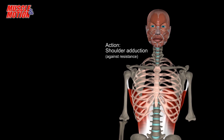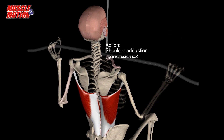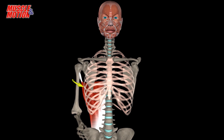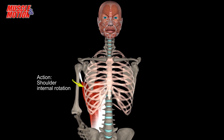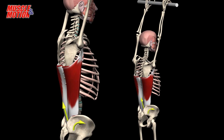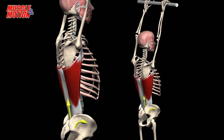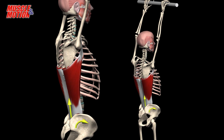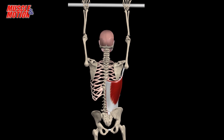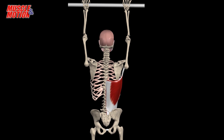Additional actions include adduction and internal rotation of the shoulder joint. Since the Latissimus Dorsi also originates from the pelvis, it can create anterior pelvic tilt. Activation of only one side of the muscle creates side flexion in the spine.